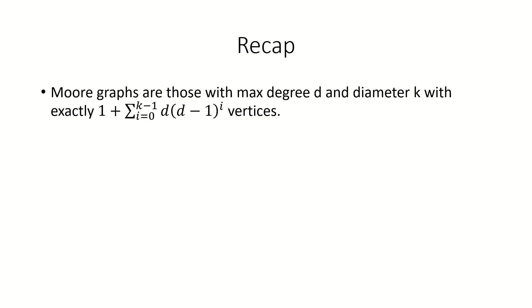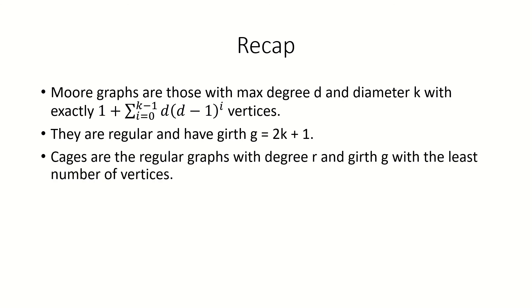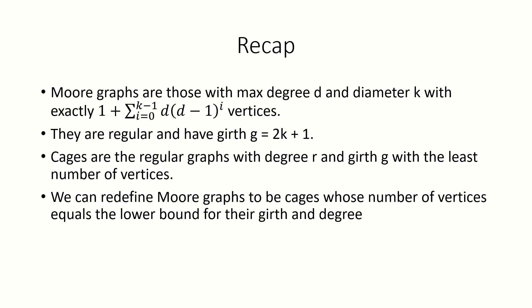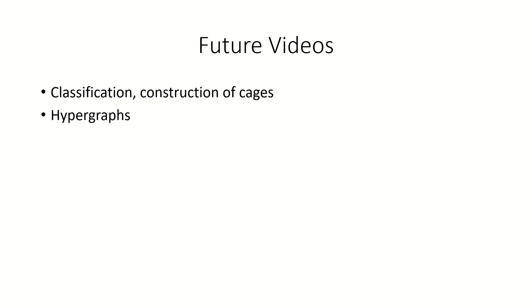To finish the video, let's do a quick recap. Moore graphs are graphs that attain the upper bound for the number of vertices given a maximum degree and diameter. They end up being regular with girth one more than twice the diameter. On the other hand, cages are regular graphs that have the least number of vertices for their given degree and girth. As we saw in this video, all Moore graphs are cages, which lets us redefine Moore graphs to be cages whose number of vertices equals the lower bound for their girth and degree. Also, Moore graphs are very rare — for graphs with degree at least 3 and girth at least 5, only graphs with girth 5, 6, 8, or 12 could be Moore graphs. In future videos, we'll take a deeper look at cages as well as hypergraphs. Thanks for watching.